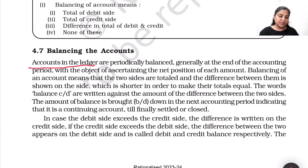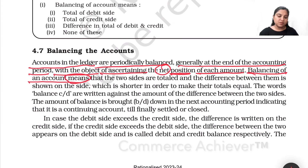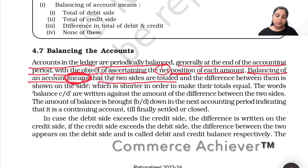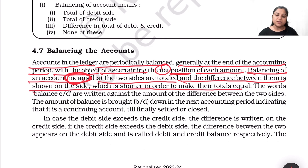Accounts in the ledger are periodically balanced, generally at the end of the accounting period, with the objective of ascertaining the net position of each account. Balancing of an account means the two sides are totaled and the difference between them is shown on the shorter side in order to make their totals equal.